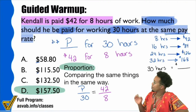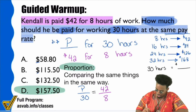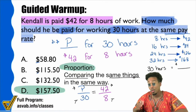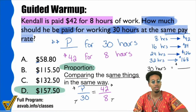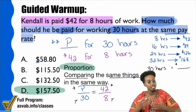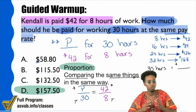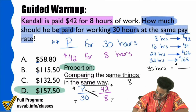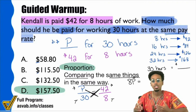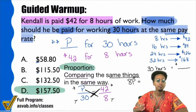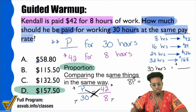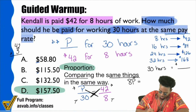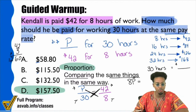We have a proportion set up because all we're doing is comparing the same things in the same way — money over time, money over time. That's how you know it's set up appropriately. All you have to do now is cross multiply and divide. P times 8 equals 8P, and 30 times 42 — you can multiply by 3 and add a zero at the end. So 42 times 3: 2 times 3 is 6, 4 times 3 is 12, put the 0 at the end — that's 1,260.